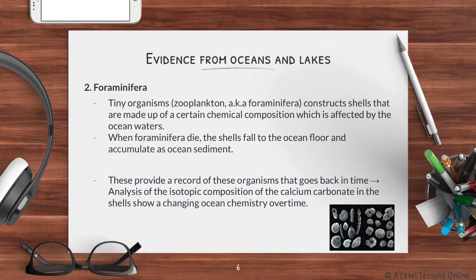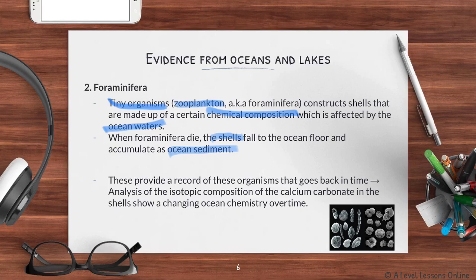Foraminifera is a stronger piece of evidence compared to isotopic records. Foraminifera refers to tiny organisms — essentially zooplanktons — that construct shells made out of certain chemical compositions which are affected by the ocean's water. Based on the climate conditions, these foraminifera will die off, their shells drop and accumulate as ocean sediment. When you pick up this ocean sediment from different climatic periods you can test the different chemical compositions present.